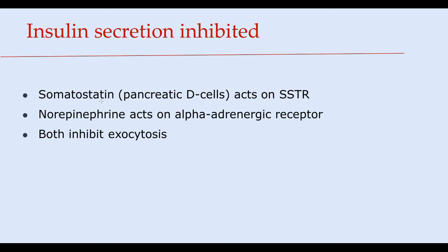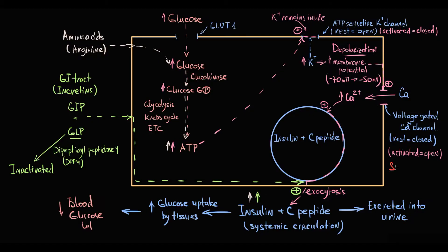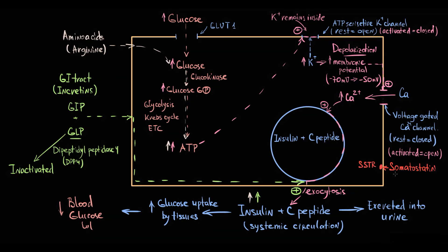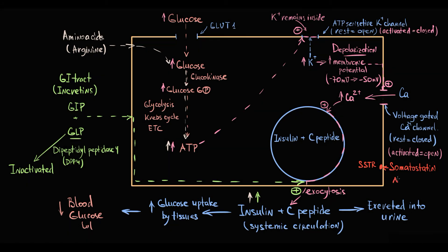There are two hormones that inhibit insulin secretion: somatostatin, secreted by pancreatic delta cells, which acts on somatostatin receptors on beta cells; and norepinephrine, which acts on alpha-adrenergic receptors. They both inhibit exocytosis and thereby both decrease insulin secretion.